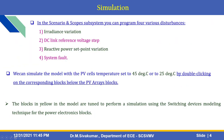The simulation scenario and scope subsystems allow programming of four various disturbances: first, irradiance variation; second, DC link reference voltage step; third, reactive power set point variation; and fourth, a system fault. We can simulate the model with PV cell temperature set to 45°C or 25°C by double-clicking the corresponding blocks. The blocks in yellow in the model are tuned to perform simulation using switching devices modeling technique for the power electronic blocks.